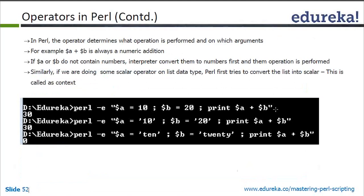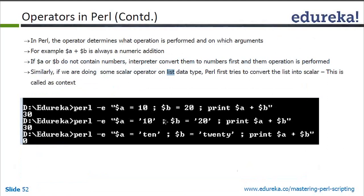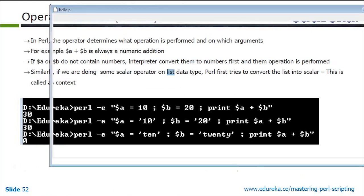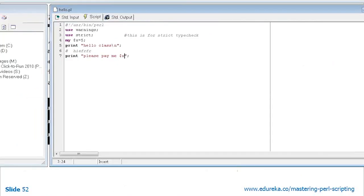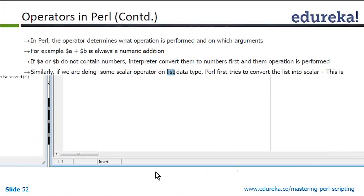If you want to use comparison like greater-than on strings, use LT, GT and related string operators. The arithmetic logic is defined internally by Perl — you must have arithmetic expressions on both sides. For a command-line example: dollar a equals 10, dollar b equals 20, print dollar a plus dollar b. On the command line you don't need 'my' declarations — you can directly put the values.